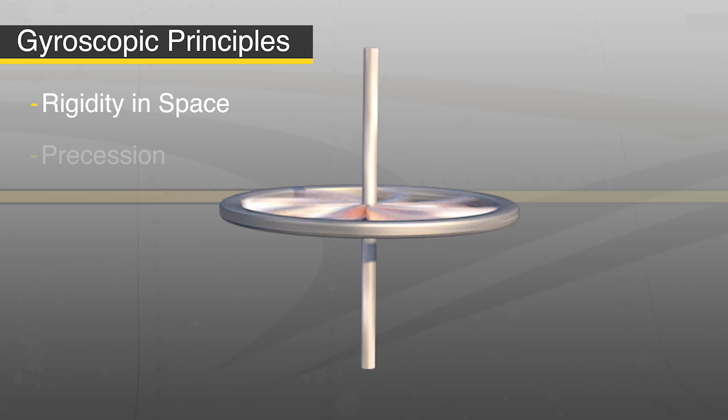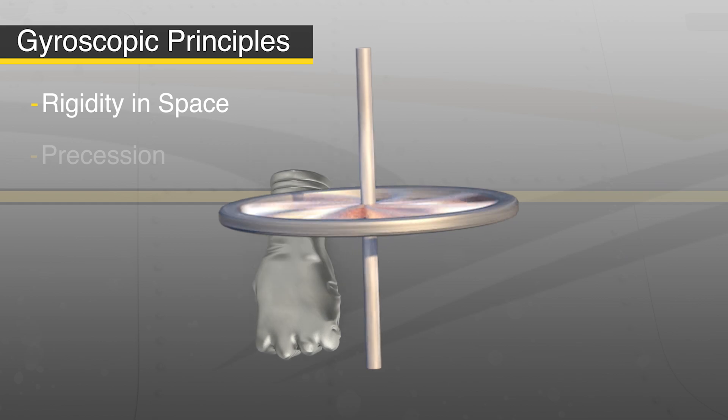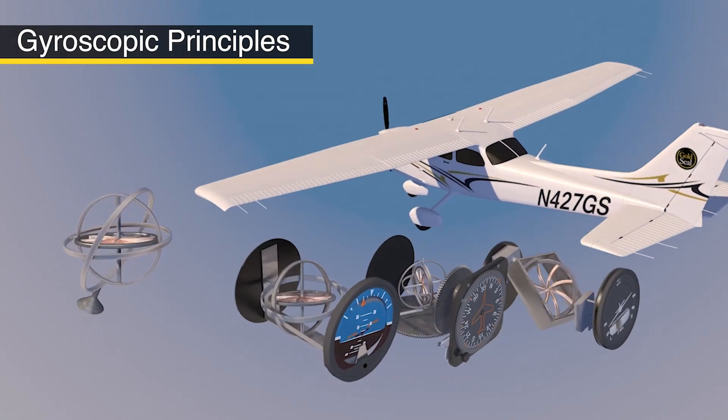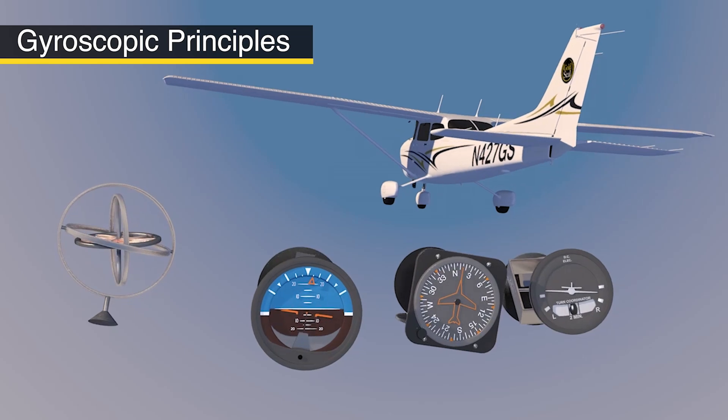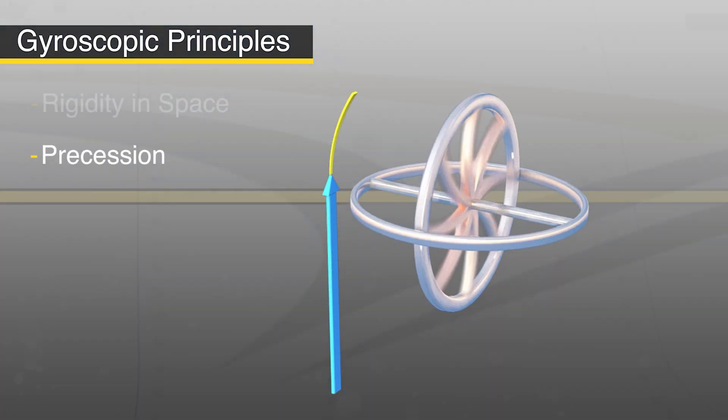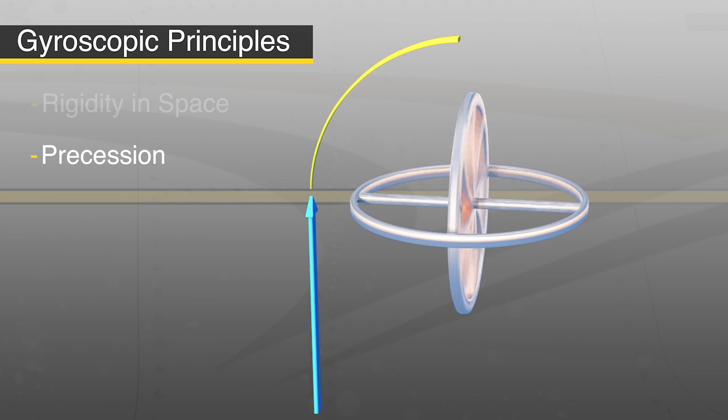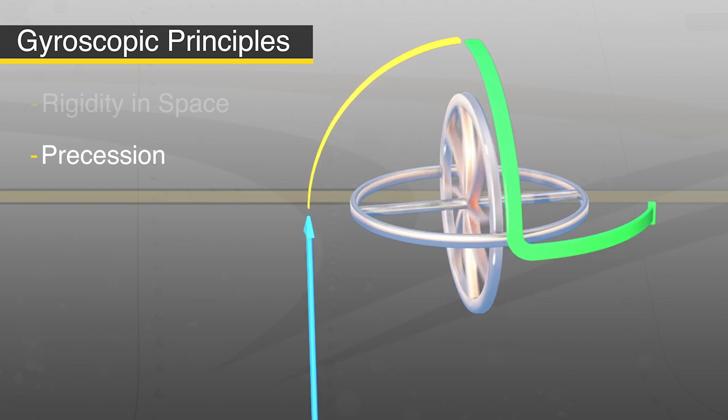This is known as rigidity in space, meaning the inertia of the spinning wheel resists tilting or turning. This resistance allows the gyros to hold their position while the instruments and aircraft rotate around it. With precession, when a force is applied to the gyro, the gyro moves perpendicular to the direction of the force and in the direction of the gyro's rotation.